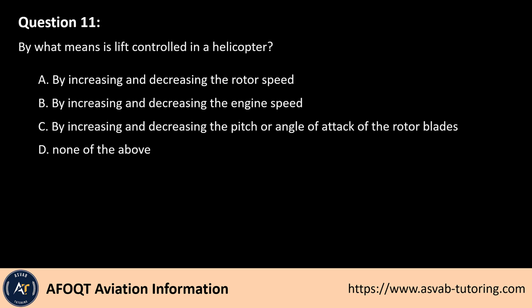Question 11. By what means is lift controlled in a helicopter? A. By increasing and decreasing the rotor speed. B. By increasing and decreasing the engine speed. C. By increasing and decreasing the pitch or angle of attack of the rotor blades. D. None of the above.